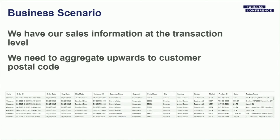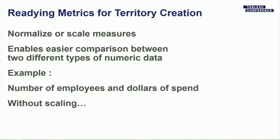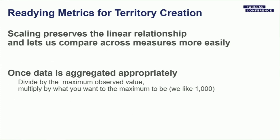In this example we have our sales information at the transaction level, and we're going to aggregate up to customer postal code using Tableau Prep. As we use Prep to ready our metrics for territory creation, we normalize or scale the measures. The reason we do this is to compare two different types of numeric data against each other — you can't just add up the total number of employees and the dollars of spend. So we scale them to a standard fixed scale, which preserves the linear relationship and lets us compare measures against each other more easily.